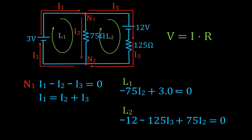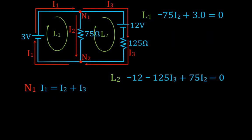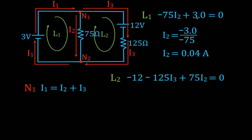Now we have three unknowns — I1, I2, and I3 — and three equations, so this becomes an algebra exercise. For loop one, the equation only has I2 as a variable. We solve: I2 equals negative 3 divided by negative 75, which gives I2 equals 0.04 amperes. Now that we know I2, we can substitute it into the loop two equation to solve for I3.